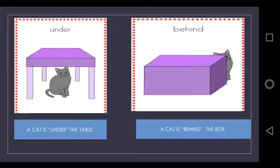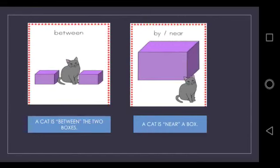In the next picture, a cat is behind the box. The word behind tells us where the cat is.